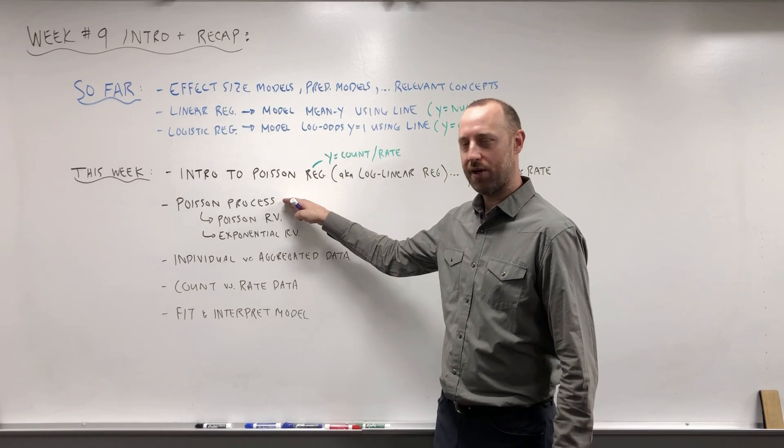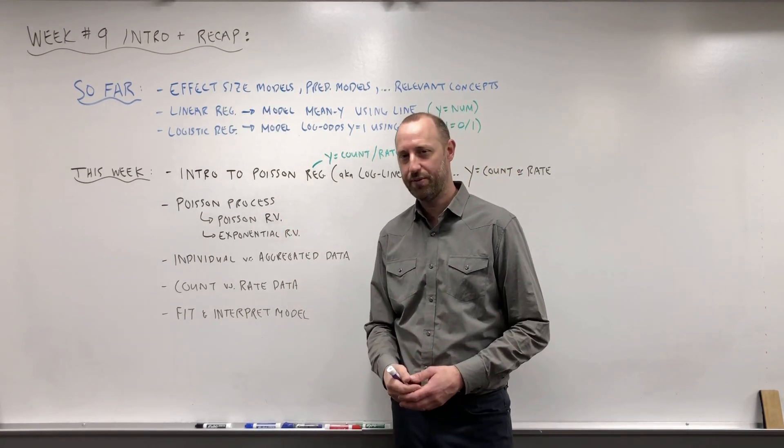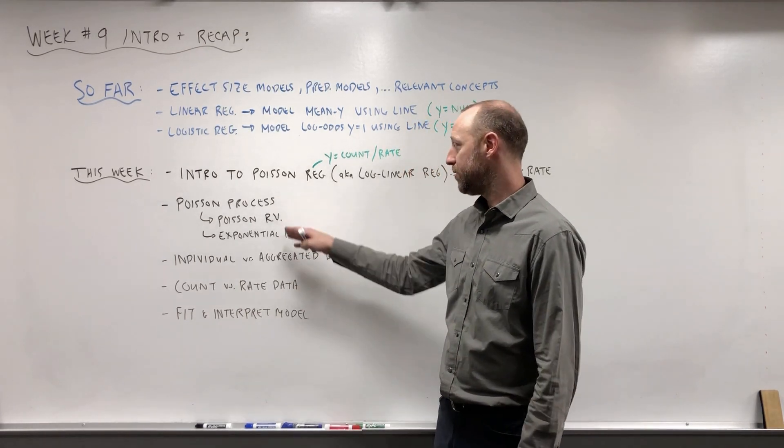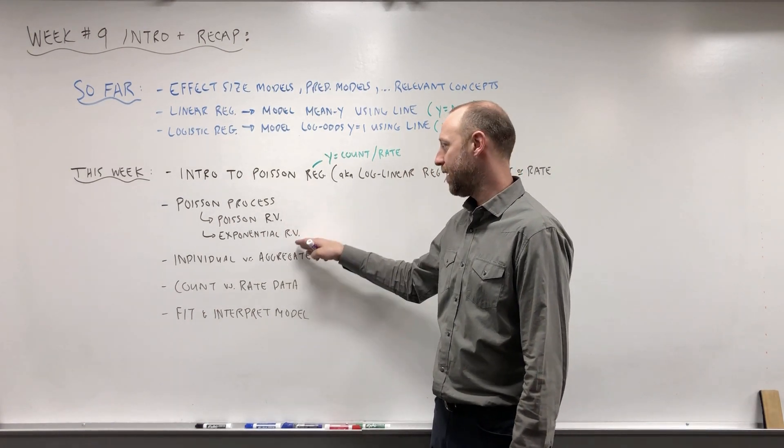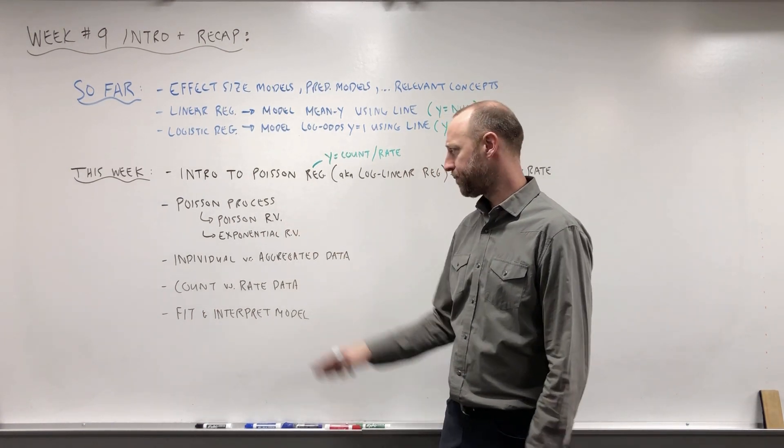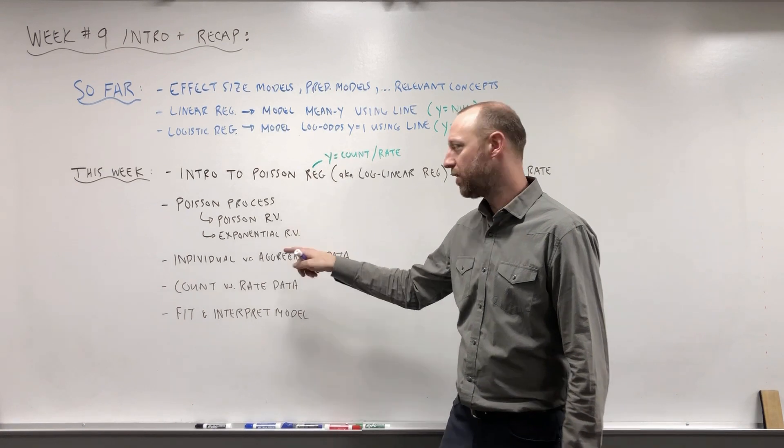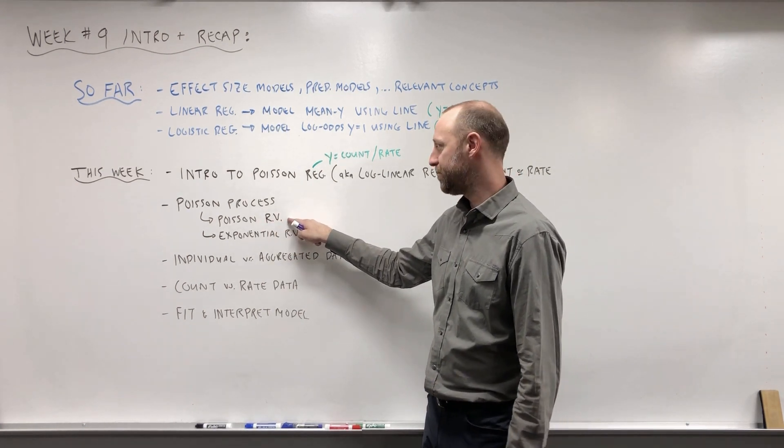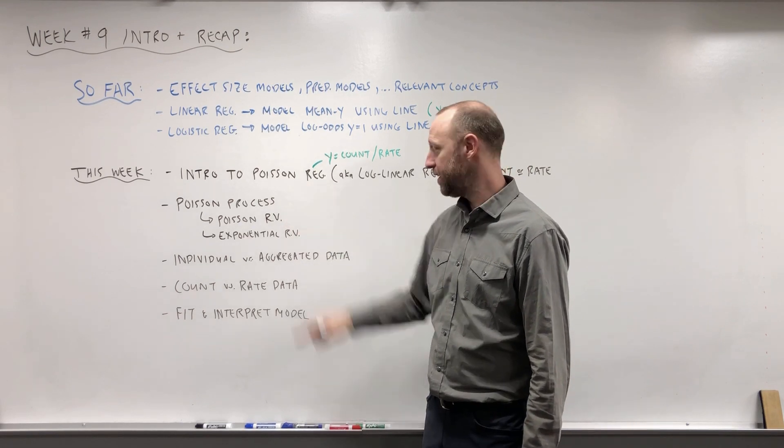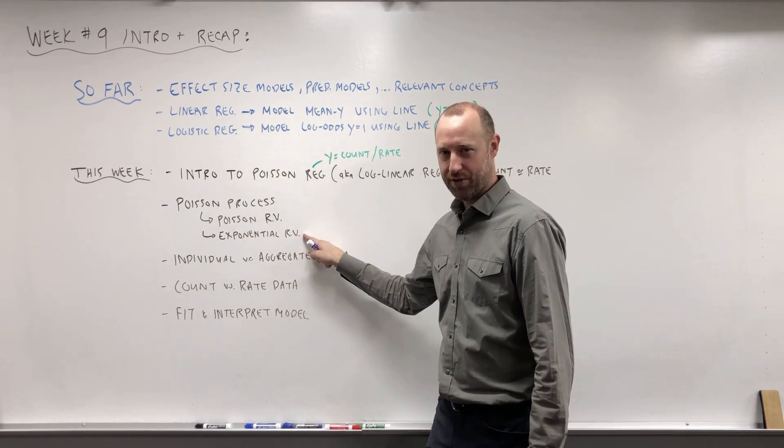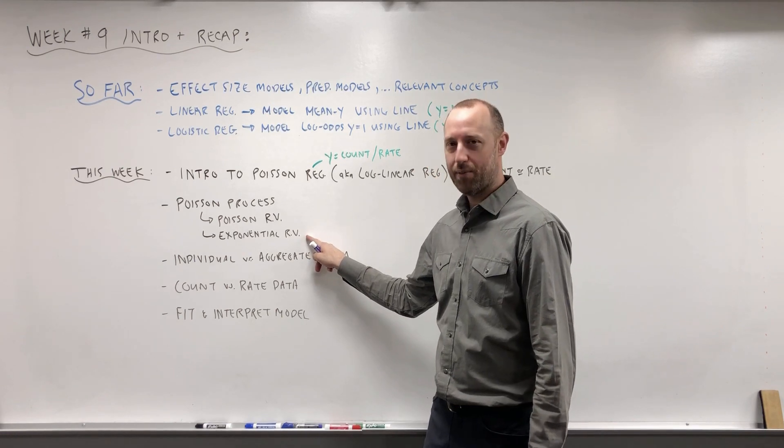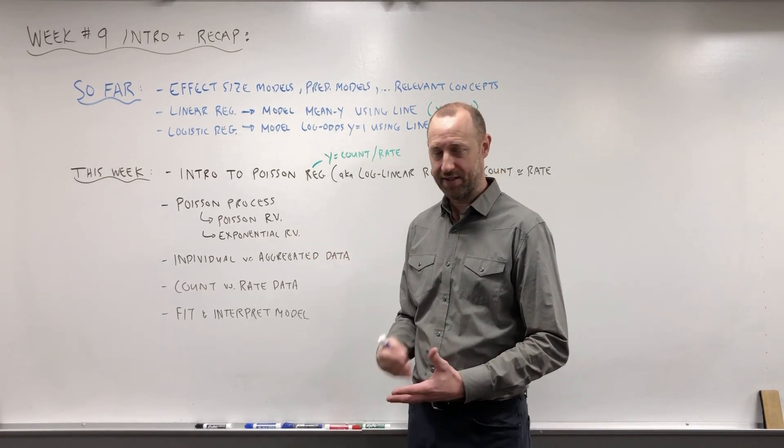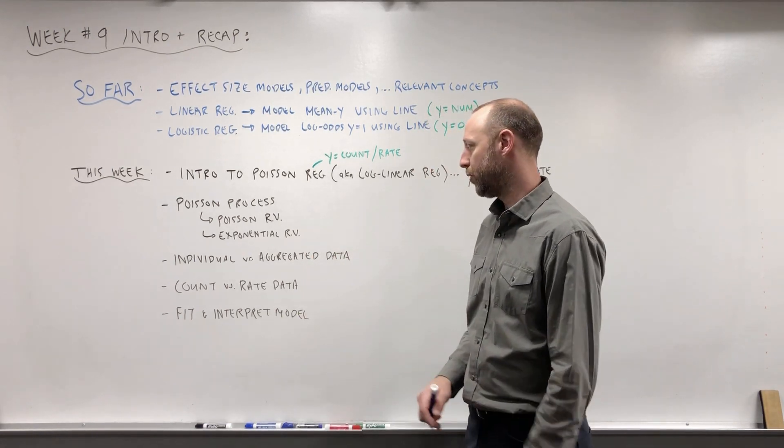So the Poisson process gives rise to two probability distributions, or two random variables: the Poisson random variable and the exponential random variable. So we'll talk about what those are. And the Poisson is going to be the underlying probability distribution for Poisson regression. And we'll see the exponential distribution, and in some sense will be the underlying probability distribution for survival analysis, which is coming up in a few more weeks.